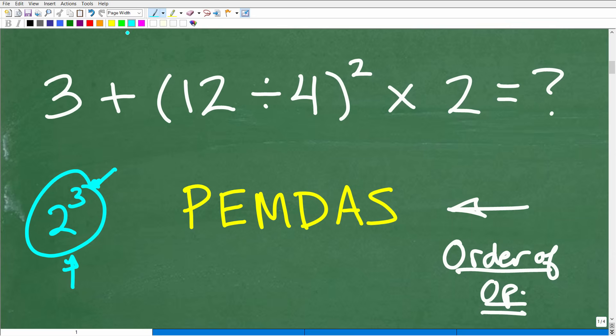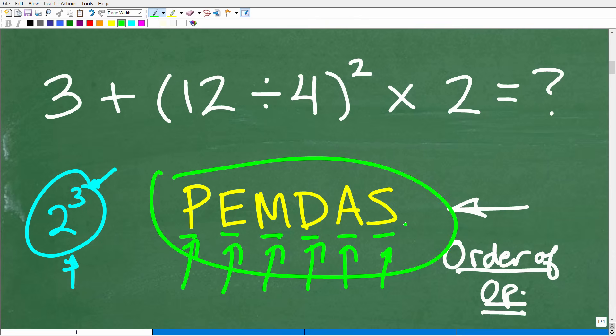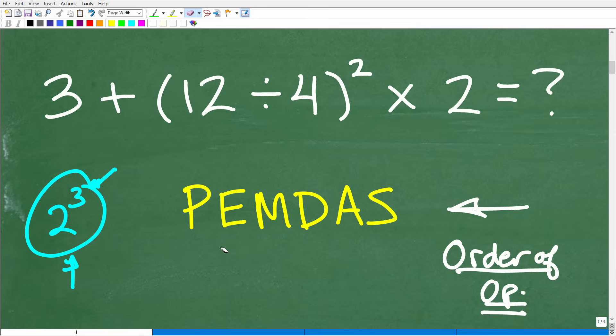Okay, so once we understand this PEMDAS, and by the way, if you want a nice little saying for this, there is a little phrase, and this has been out for, I don't know how many generations, probably your great-grandparents probably remember this. It goes, please excuse my dear Aunt Sally. Please excuse my dear Aunt Sally. I'm not sure what dear Aunt Sally did, but please excuse my dear Aunt Sally. It's a little mnemonic, a little memory aid for PEMDAS.